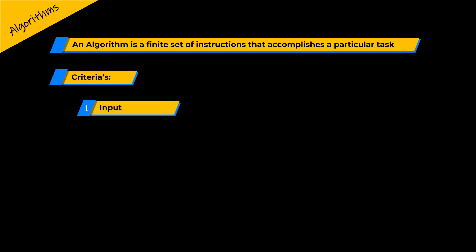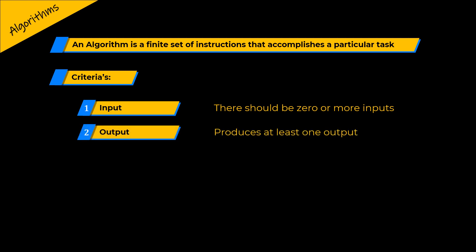The first criteria is the input. There should be zero or more inputs provided to an algorithm. The second criteria is the output. The algorithm must produce at least one output.